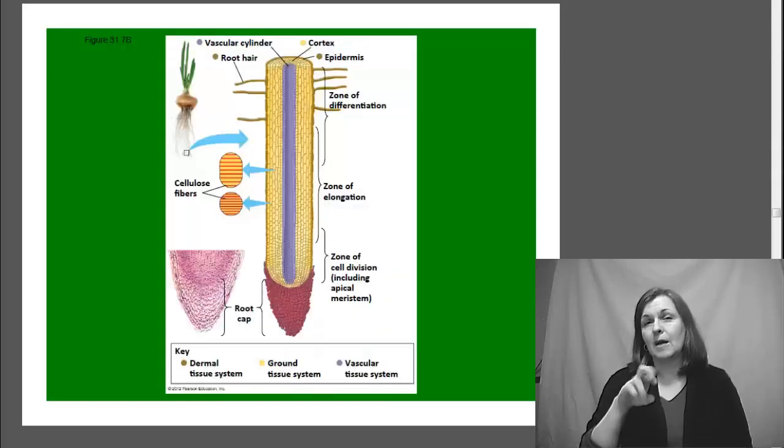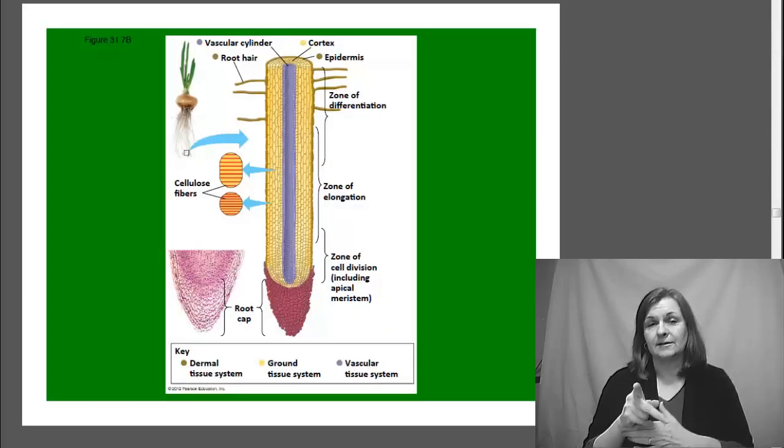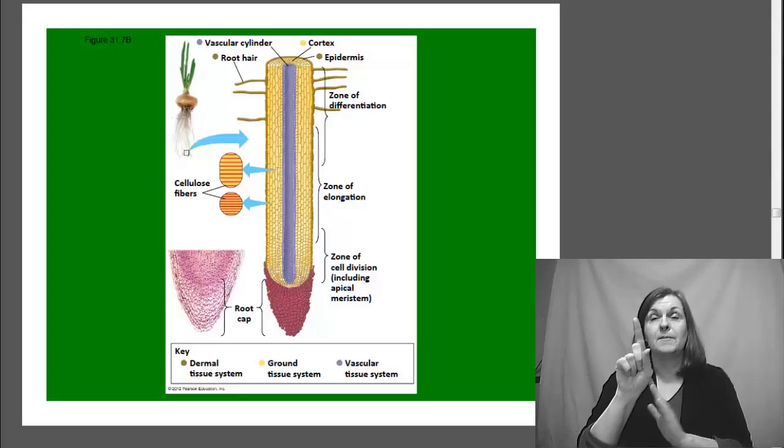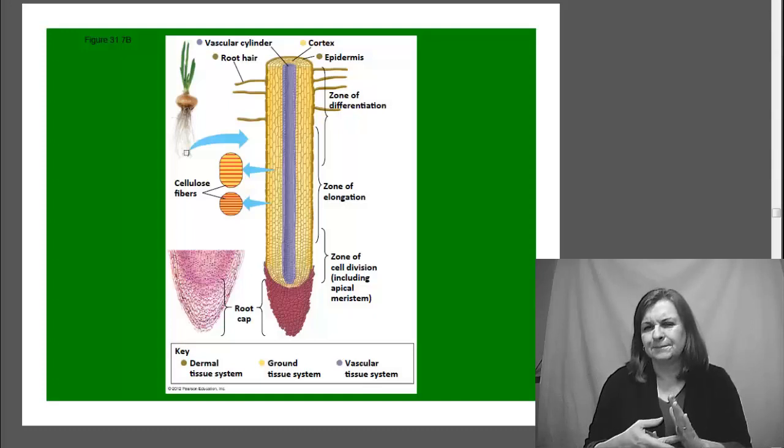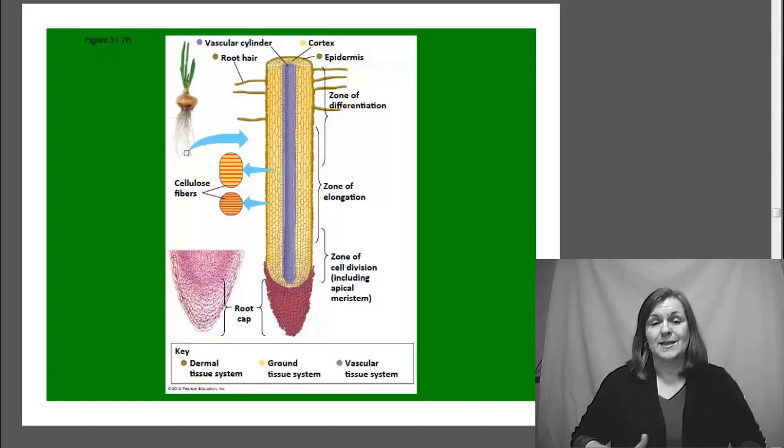When we talk about primary growth in plants, we not only talk about the plant getting taller above ground, we also have to talk about the plant getting taller below ground. What does this mean? Well, this means root growth. So throughout the life of the plant, the roots will get longer and longer and longer.